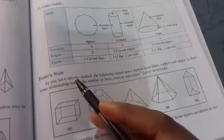And this is the basic difference between polyhedron and non-polyhedron. So I think you understand now.